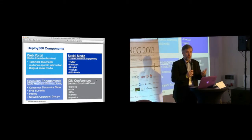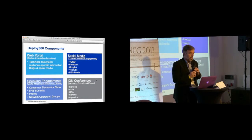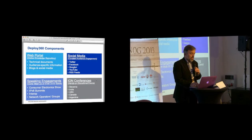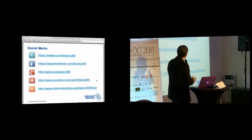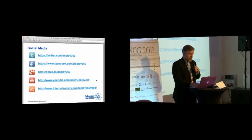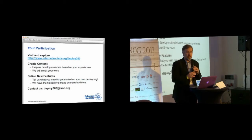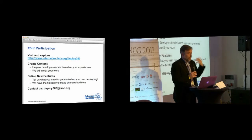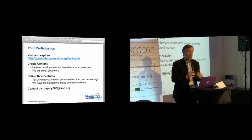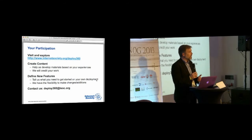We also speak frequently at conferences all around the world — some are network operator groups like this one, others are industry conferences. We also have these ION conferences, such as the one here in Krakow. We've had recent ones in Singapore, one coming up in November in Toronto, another in Sao Paulo, Brazil, and many other events. We're very active on Twitter, Facebook, Google Plus, YouTube, and similar channels. We also encourage people to help us create content — we have roadmaps showing the kinds of documents we want to add. And we're looking for feedback: what's stopping you from deploying IPv6? What's stopping you from deploying DNSSEC? What's stopping you from making your routing infrastructure more secure? How can we help?